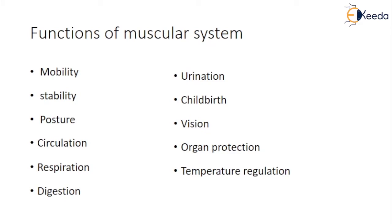Stability: muscle tendons stretch over joints and contribute to joint stability. Muscle tendons in the knee joint and shoulder joint are crucial in stabilization. The core muscles — those in the abdomen, back, and pelvis — also stabilize the body and assist in tasks such as lifting weights.